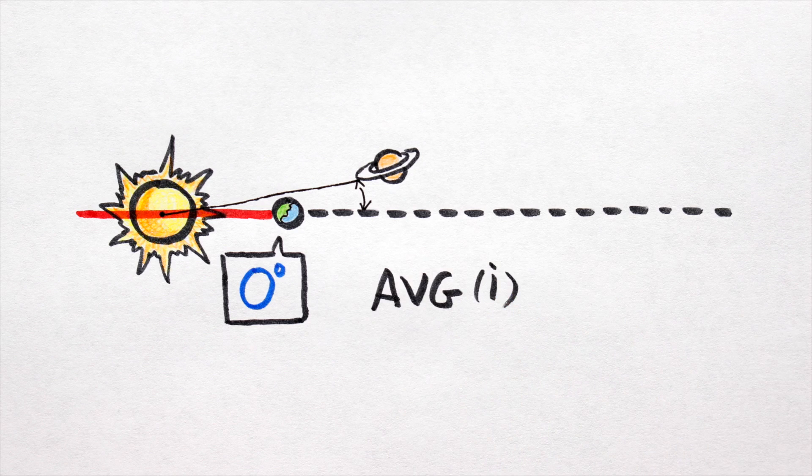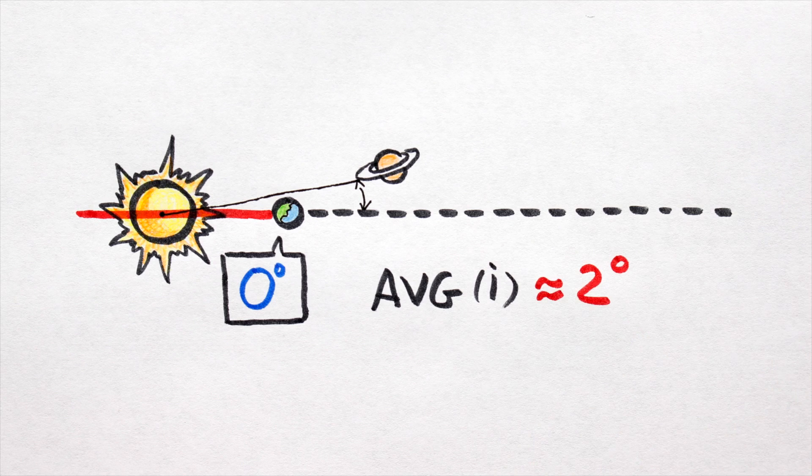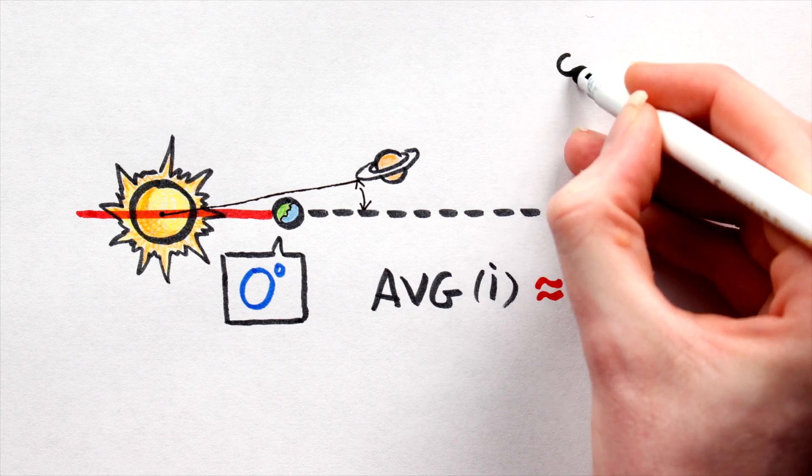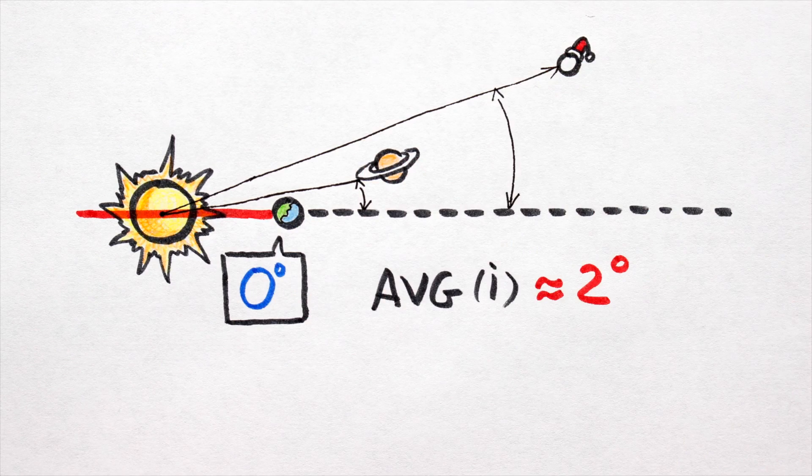In our system, the average orbital inclination of the planets with respect to the ecliptic plane is about 2 degrees. The general idea is to keep planets on low orbits, saving the highly inclined orbits for oddball asteroids and Kuiper Belt objects.